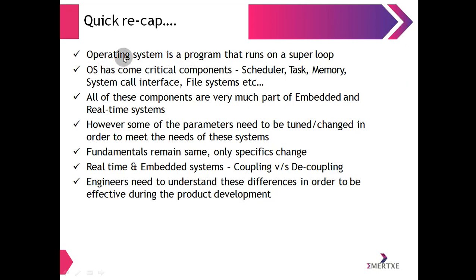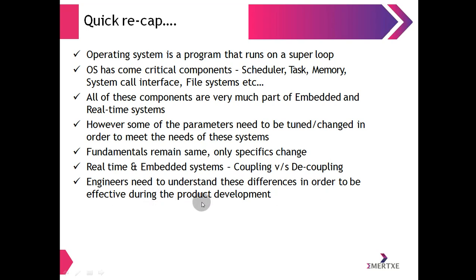Quick recap of the last four lectures: The operating system is a program that runs on a super loop. The OS has critical components including scheduler, task memory, system per interface, and file system exception. All these components are part of embedded and real-time systems. However, some parameters need to be tuned or changed to meet system needs. Fundamentals remain the same; only specifics change. Engineers need to understand the differences between real-time and embedded system coupling versus decoupling to be effective.